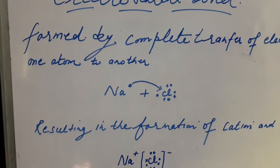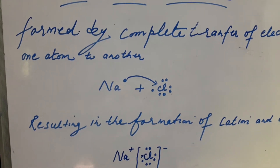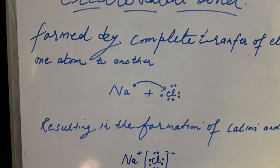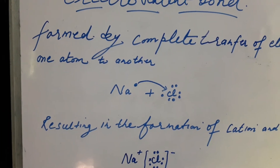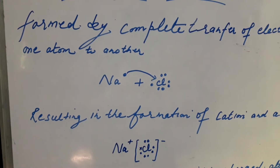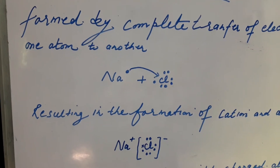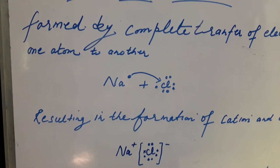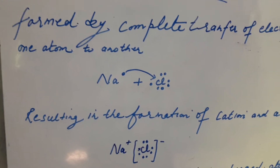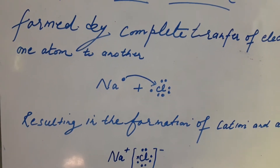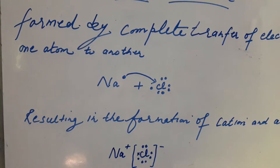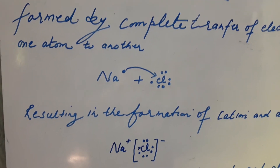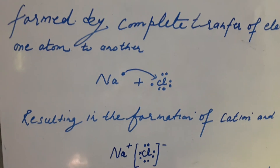We will take the example of sodium chloride. Sodium's electronic configuration is 2, 8, 1. In order to obtain a stable electronic configuration of the nearest noble gas, it has to lose one electron.